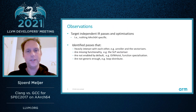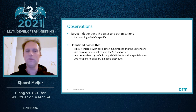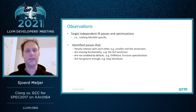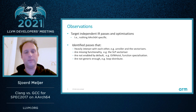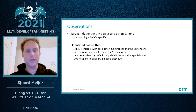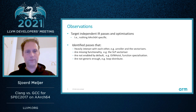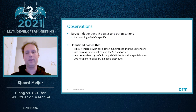Some first observations: all the work done so far involves target-independent IR passes and optimizations — not really anything AArch64-specific, except some cost modeling. We identified that there are passes that heavily interact with each other — for example, the unroller and the vectorizers not giving the most efficient results. There was also missing functionality in the SLP vectorizer, passes not enabled by default such as GVN hoist and function specialization, and passes that are not generic enough, such as loop distribute.